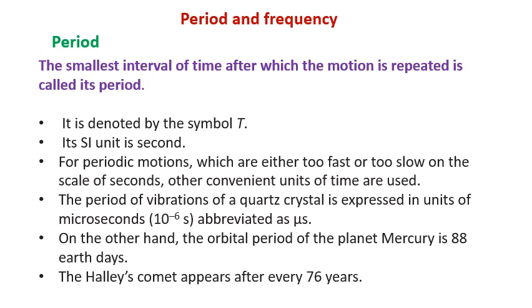For periodic motion which are either too fast or too small on the scale of seconds, other convenient units of time are used. The periods of vibration of a quartz crystal is usually expressed in microseconds. On the other hand, the orbital period of planet Mercury is 88 earth days.